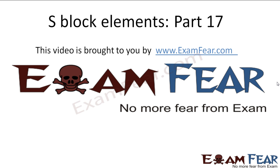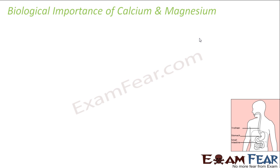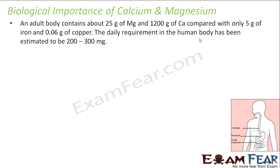This video on s-block elements part 17 is brought to you by examfear.com. Let's talk about some biological importance of calcium and magnesium. An adult body has 25 grams of magnesium and 1200 grams of calcium, as compared to only 5 grams of iron and 0.06 grams of copper.